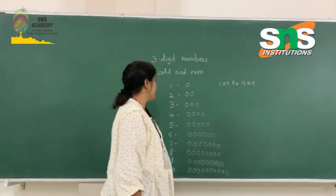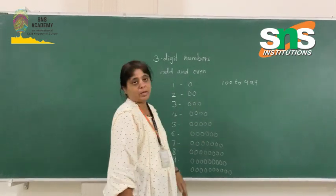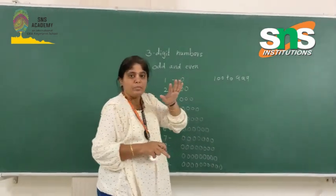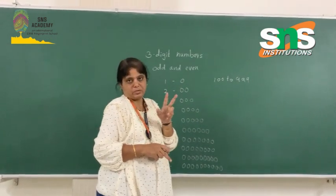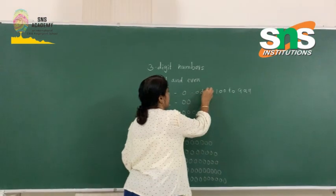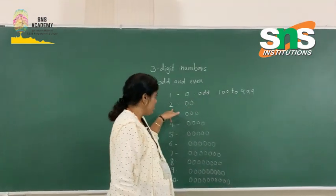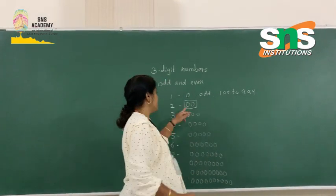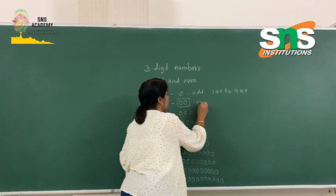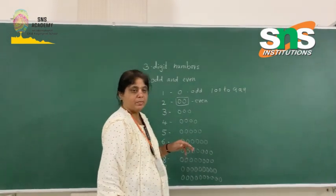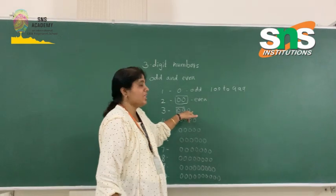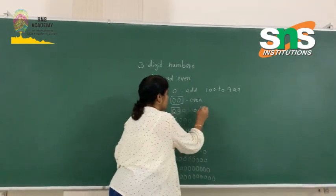Now let us see which numbers can be paired. For number 1, there is only one bead — I cannot make a pair. A pair means we need 2 objects together. So, the number 1 is an odd number. For number 2, I can make a pair because there are 2 beads. So the number 2 is an even number. For number 3, one single bead is remaining after pairing, so this number is an odd number.